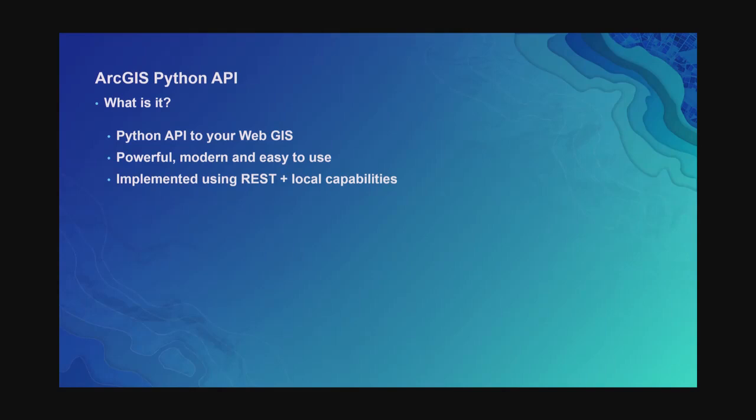It's talking to ArcGIS Online or ArcGIS Server through the REST interfaces primarily. We are adding more local capabilities to it — if you've got your own local data, shapefiles, or file geodatabases, you can read it, publish it, or use spatial data through Pandas from many different formats. You can write it out to geospatial formats and publish it to your web GIS.